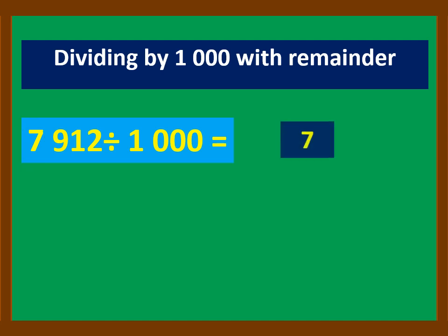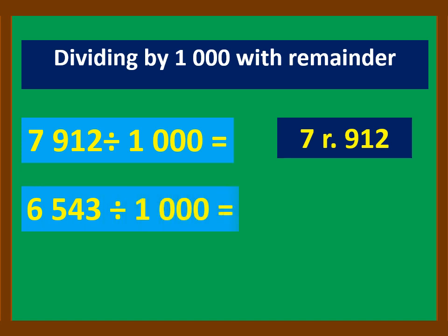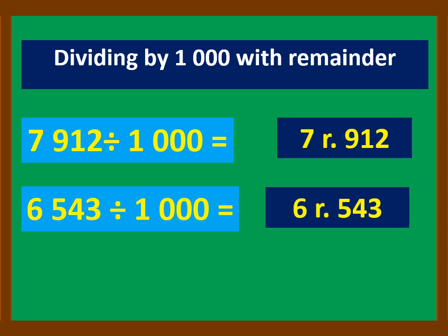For 6,543 divided by 1,000, the last three digits are the remainder, while the remaining number is the quotient. Okay, and thank you.